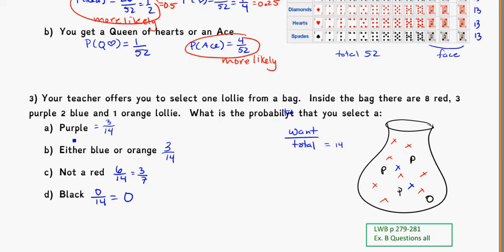So again, dealing with these probabilities, you just need to figure out your total, and then what you put on top is how many possible options do you actually want out of the total possible available to you.